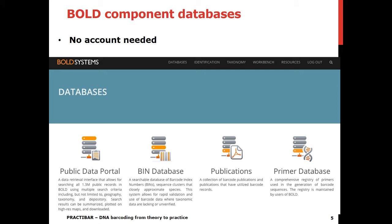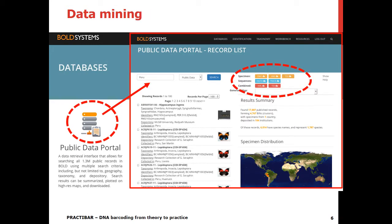There are a few databases that can be accessed by anybody without an account. There is a public data portal, a BIN database, a constantly growing database with publications using DNA barcoding, and a primer database. The largest one hosts all public data. To do some data mining in this part, you need to search the database based on a specific term, whether it's taxonomy or geography, or even the institution storing the vouchers, and then download the results. For instance, I searched for Peru and found more than 17,000 public records available for this country, and I can download the data in a certain format and analyze it with whatever software I would like.